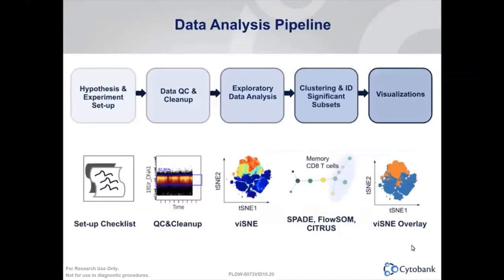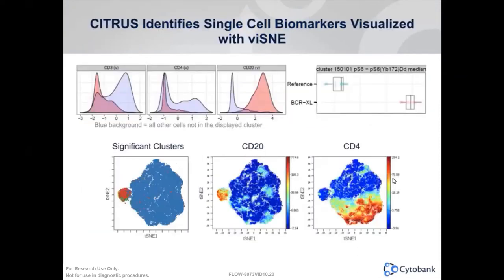Beyond running Citrus by itself, you can also incorporate Citrus into a data analysis pipeline with other algorithms like viSNE. In this workflow, you run viSNE first and then run Citrus on your viSNE data. Your Citrus results will have tSNE1 and tSNE2 channels, allowing you to overlay your Citrus clusters back onto viSNE to identify the phenotype and what they look like on the viSNE map. Here, Citrus was run to identify the median expression of phospho-S6 in control versus BCR-stimulated samples.